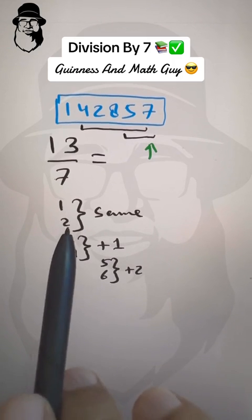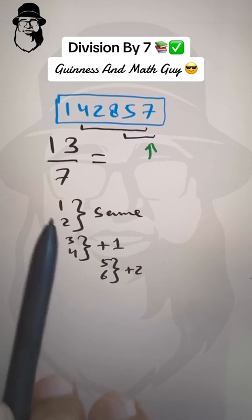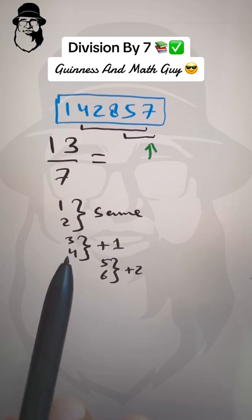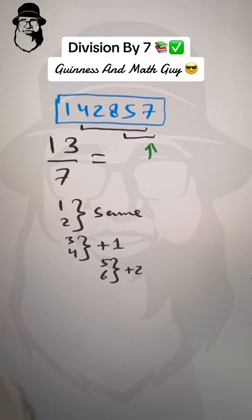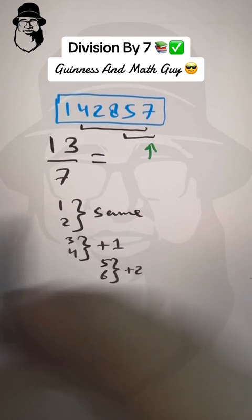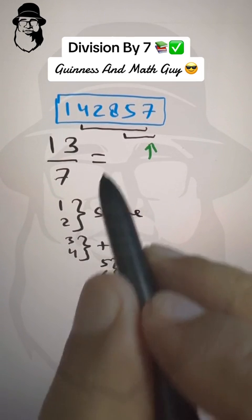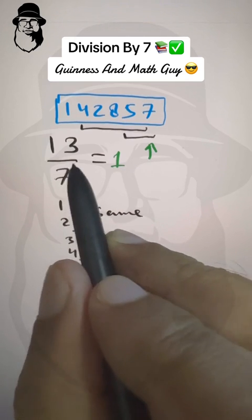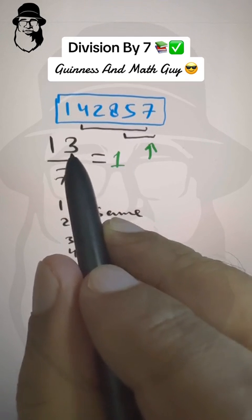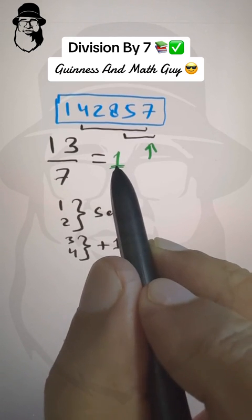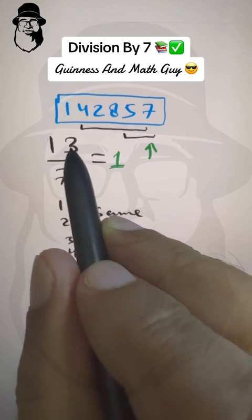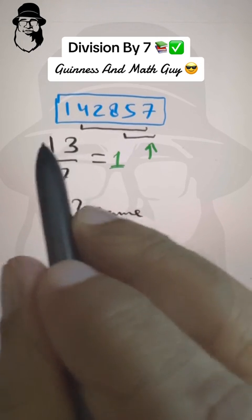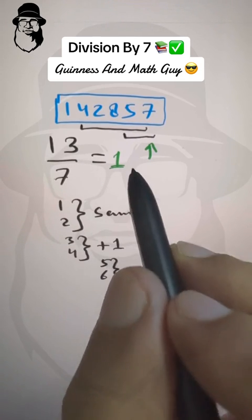Now, what do I mean by 1, 2, 3, 4, 5, 6? These are the only remainders that you will get when you are dividing by 7. So here, in this original question, 7 times 1 is 7, right? 7 times 2 is 14. 14 is greater than 13. So you will say 7 times 1 is 7, and the remainder is 6 now because 7 is gone from 13.